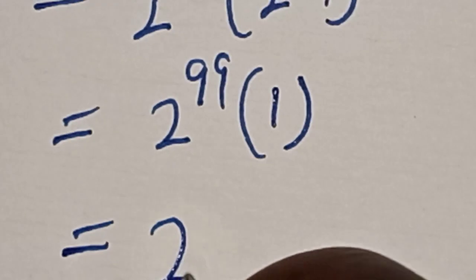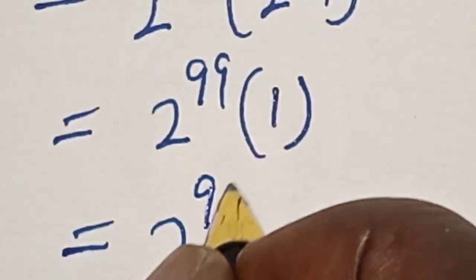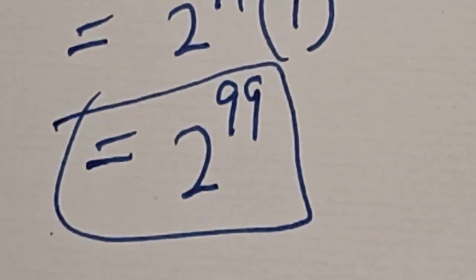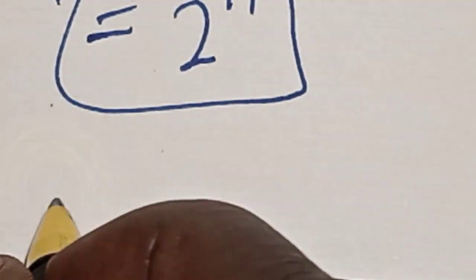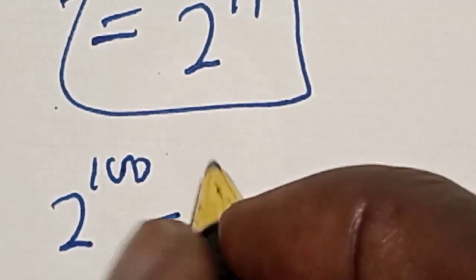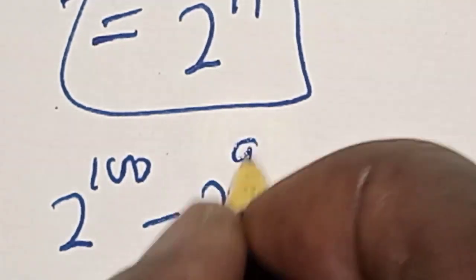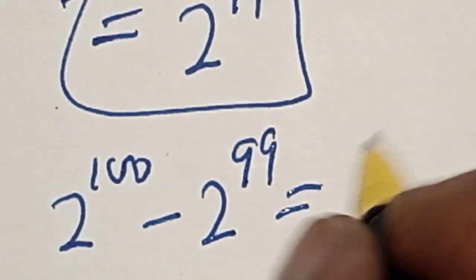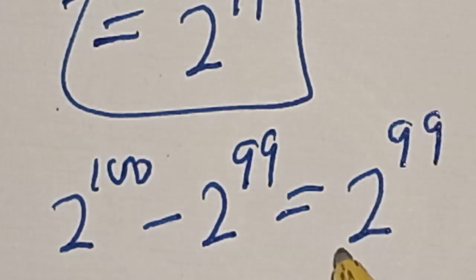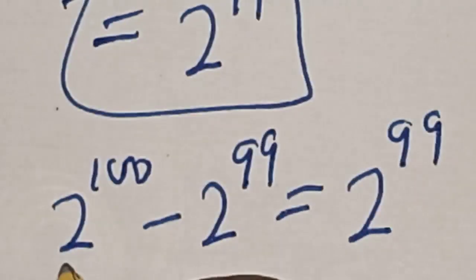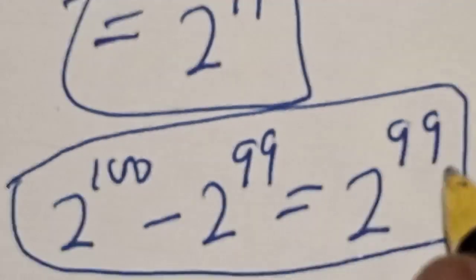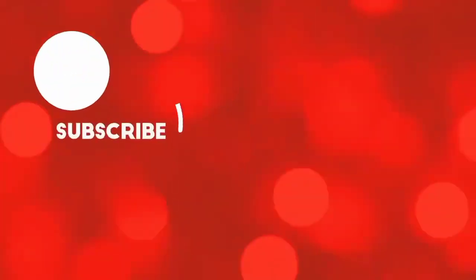Then 2 raised to power 99 times 1 is equal to 2 raised to power 99. That is our answer. Therefore, 2 raised to power 100 minus 2 raised to power 99 is equal to 2 raised to power 99. Before you leave, like, share, comment and subscribe. Thank you, bye bye!